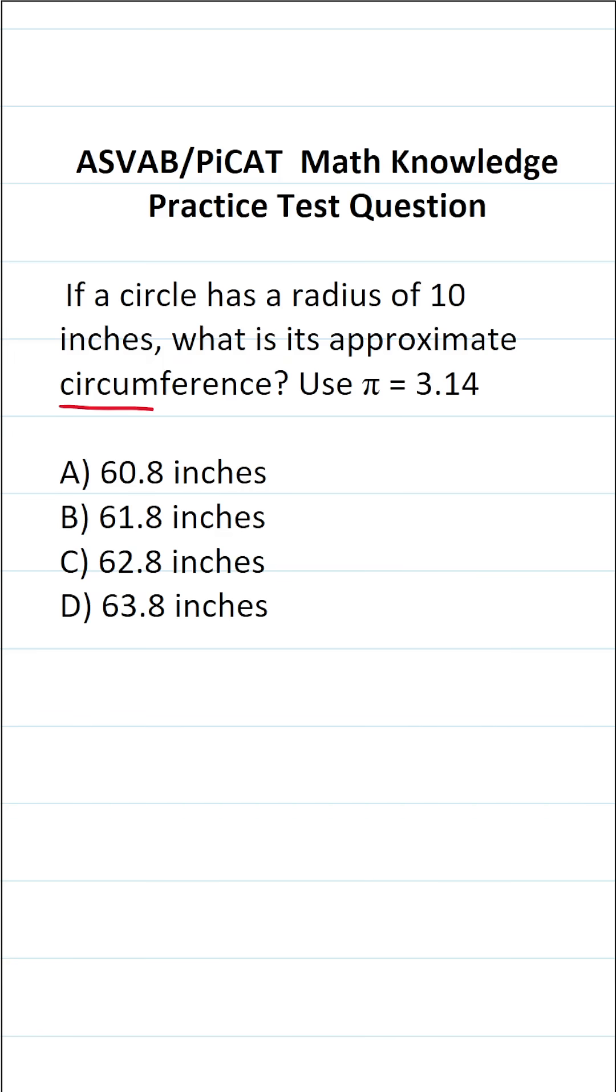As far as finding the circumference of a circle is concerned, you have to remember that there are actually two formulas you can use. Circumference C equals pi times the diameter of a circle, or circumference equals 2 pi r.